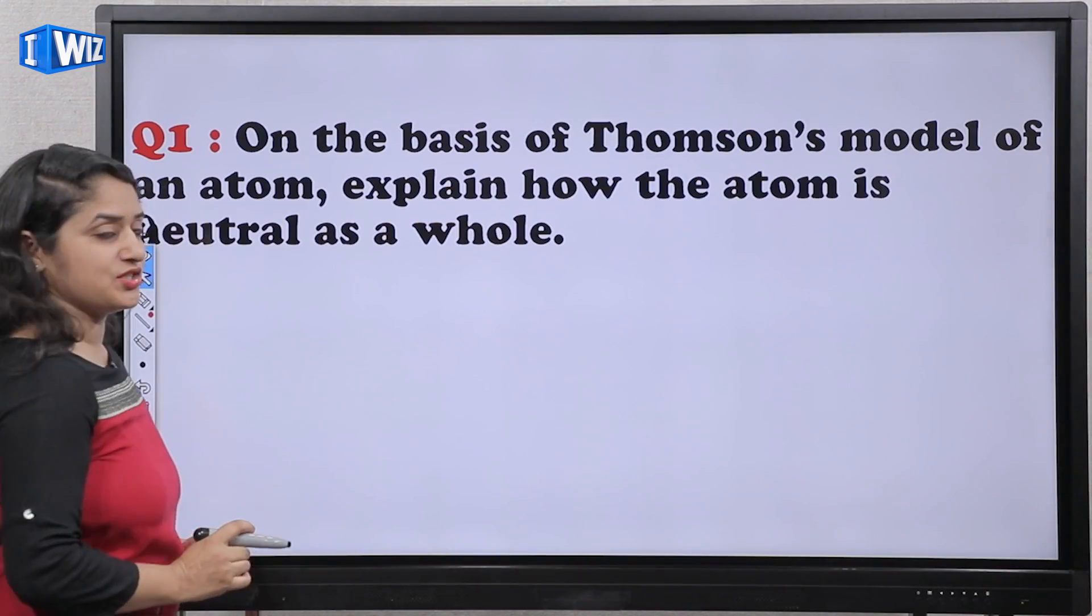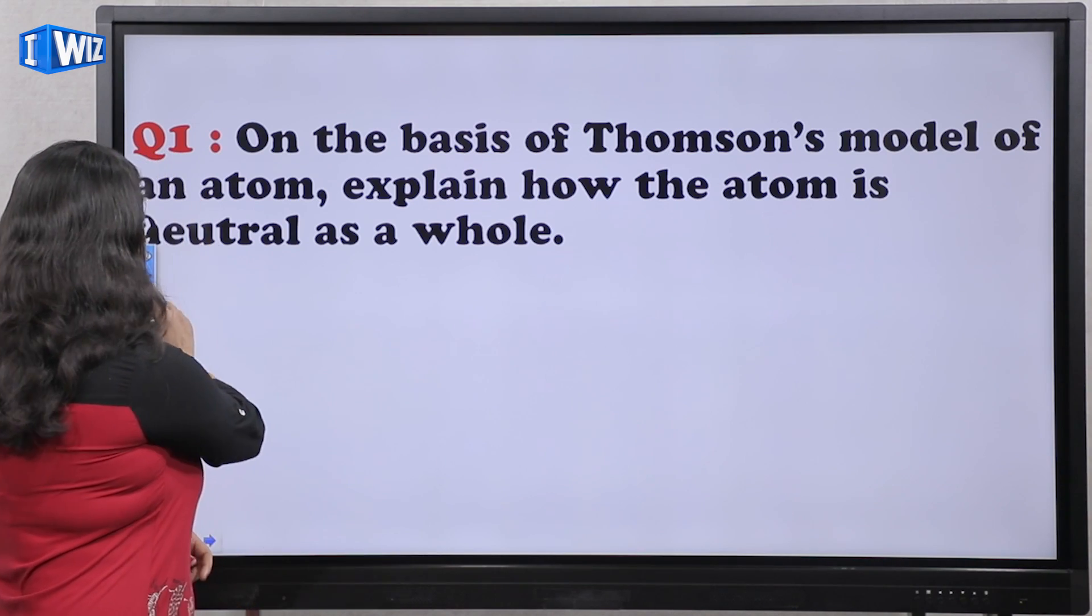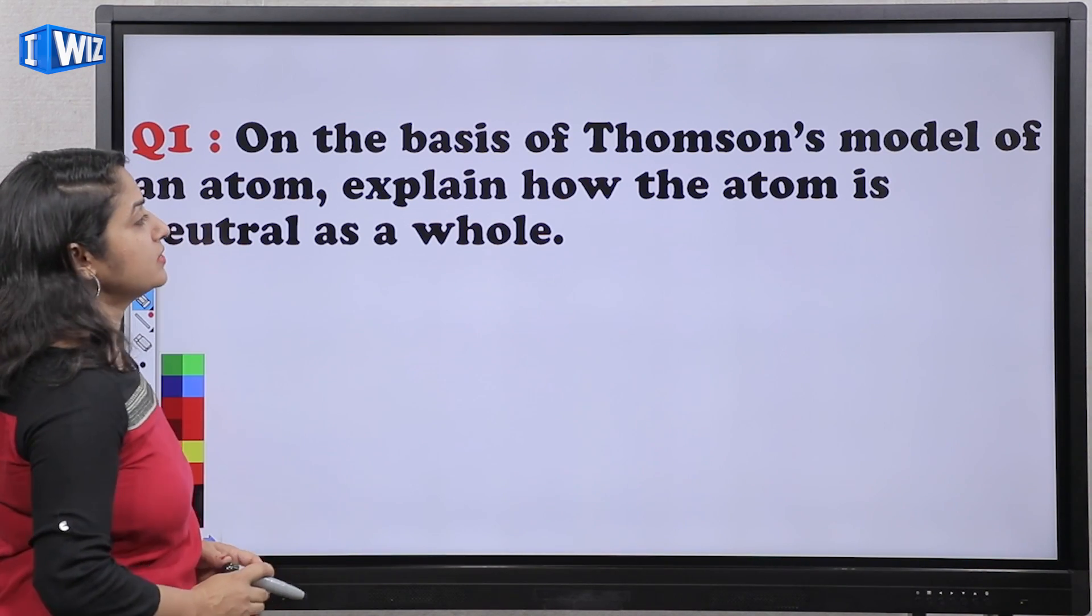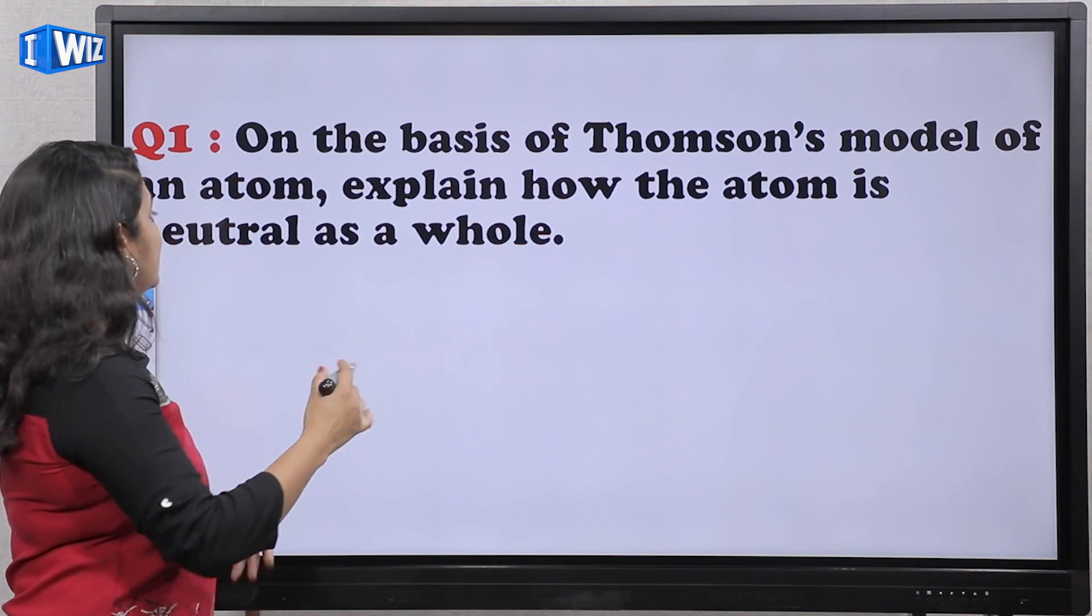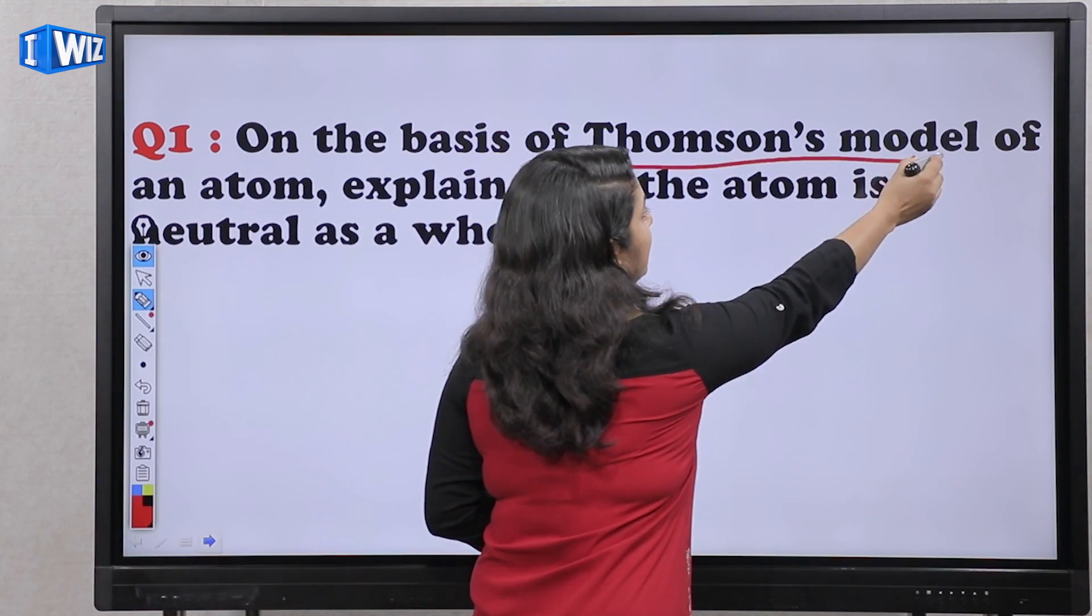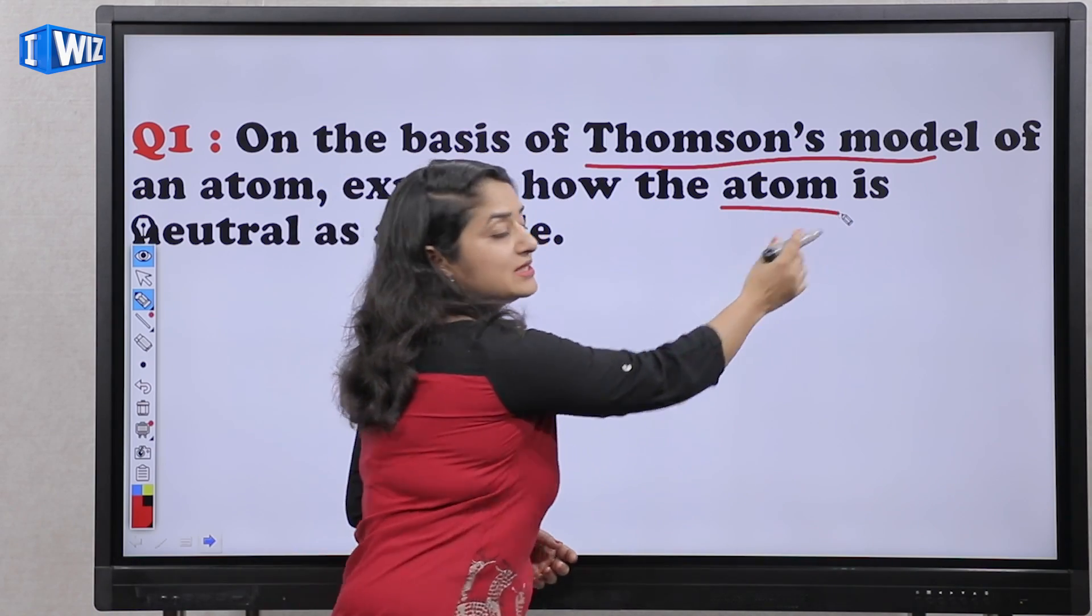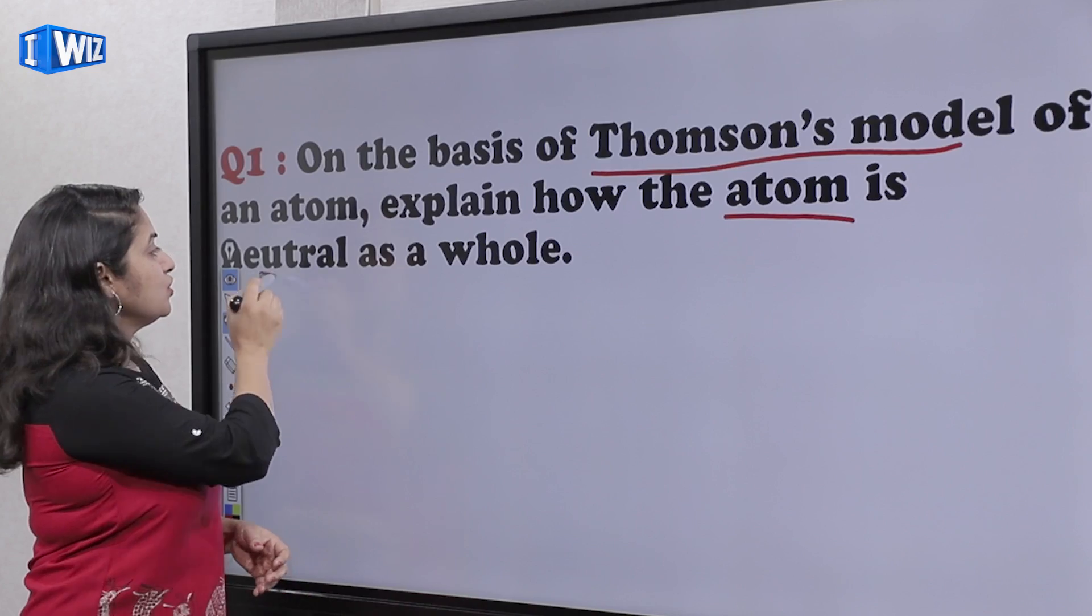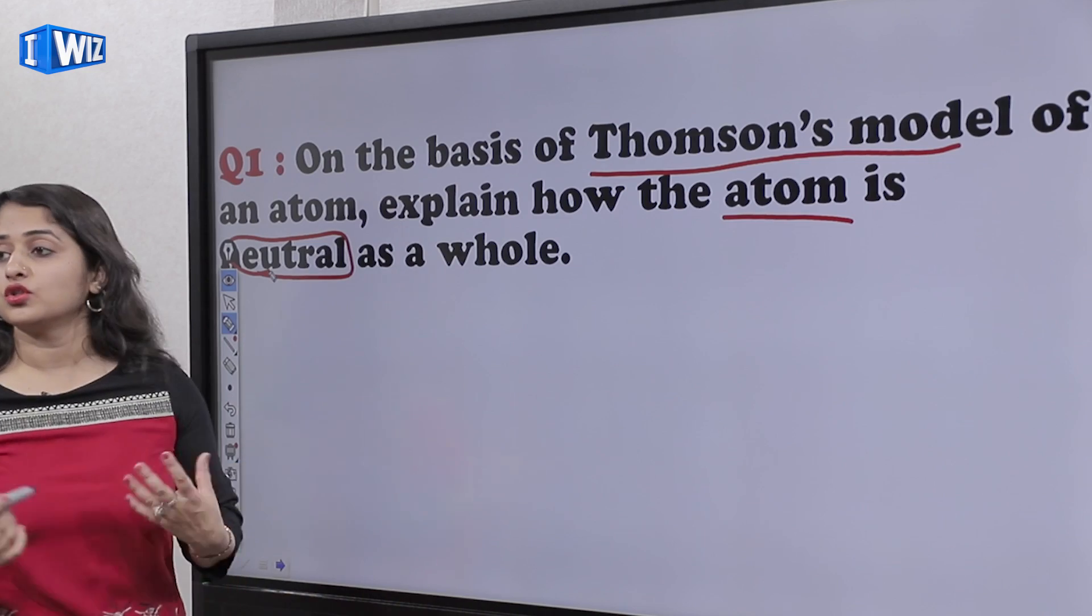Our first question is: On the basis of Thomson's model of an atom, explain how the atom is neutral as a whole. That the Thomson's model, how can we say that the atom is neutral? Neutral means no charge.